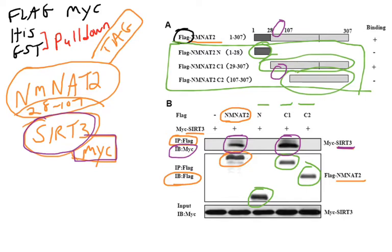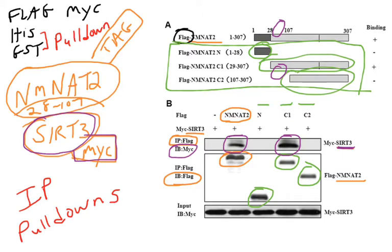This video has covered immunoprecipitations and, very similarly, pull-downs — another way to capture proteins and protein-protein complexes, not using antibodies but using resins that bind to artificially fused proteins like the GST protein or a His-tag region. That's protein-protein interactions, and we will see this in a number of papers in the future.